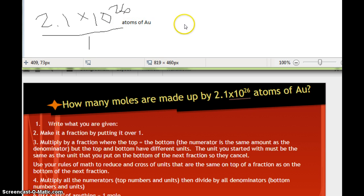Alright, and then our next fraction. What has to be the unit on the bottom of this next fraction? It has to be atoms of AU, because again, we need to have our units cancel. Alright, and what are we converting to? We're converting to a mole.